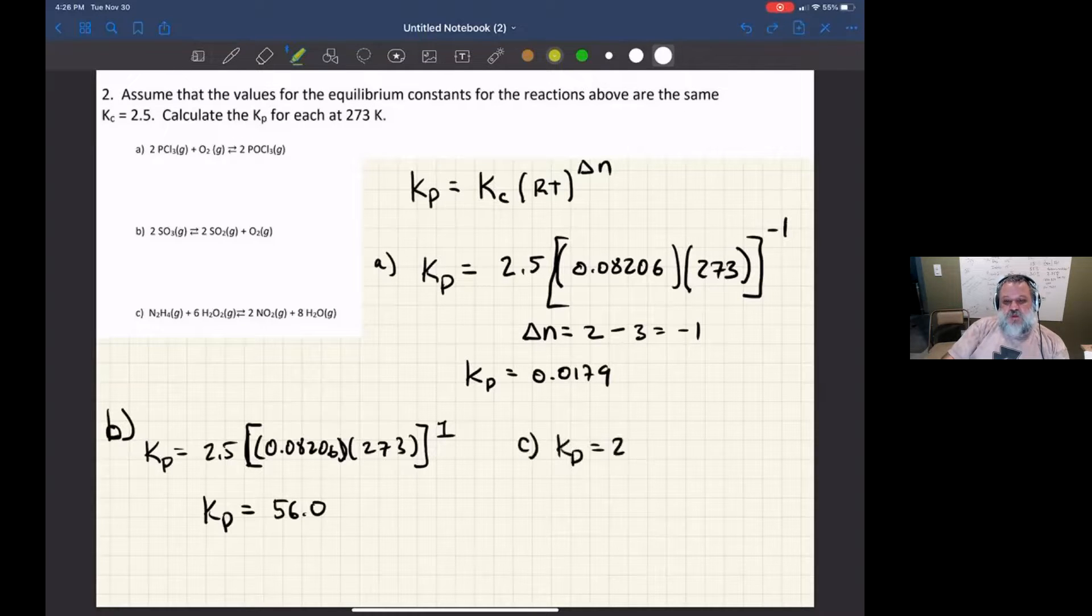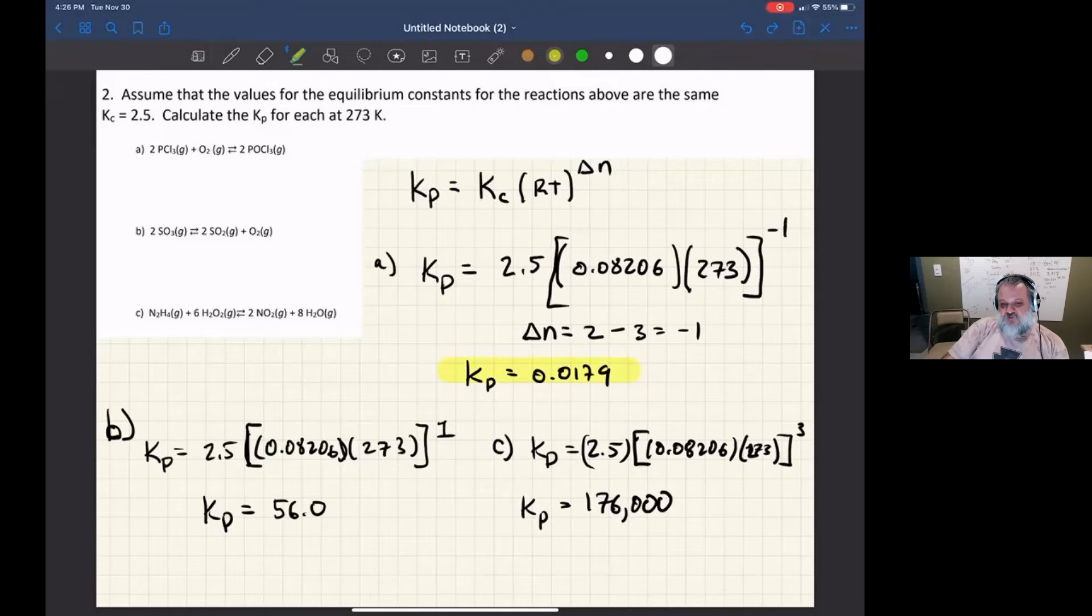On the C, Kp equals 2.5 times 0.08206 times 273. And what's the power here? It looks like I've got 10 moles of gas minus 7 moles of gas. So it should be the power of 3. So the equilibrium constant in terms of pressure here is 176,000.